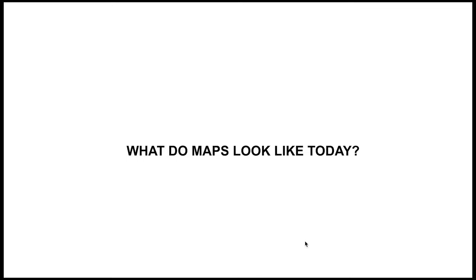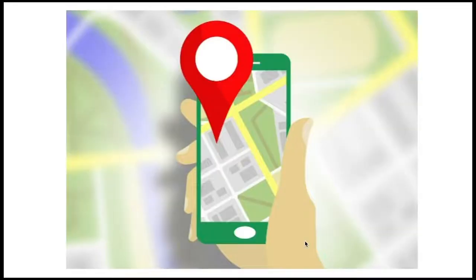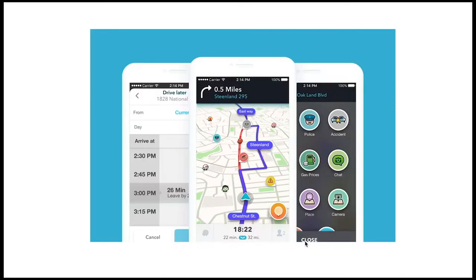What do maps look like today? Today we often use Global Position System technology, or GPS, to navigate through space. An automated voice tells you where to go. When we follow GPS maps, we use hearing as well as sight. Because these directions are automatic, sometimes we follow them mindlessly. This is an image from a Waze map app that you would find on your phone.